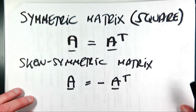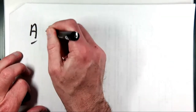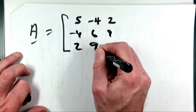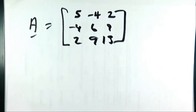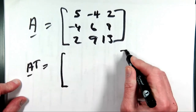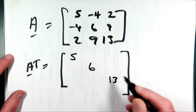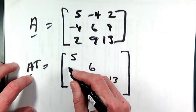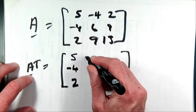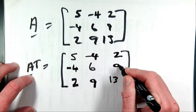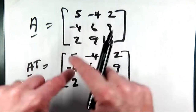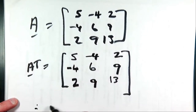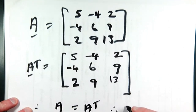Let's look at an example. Suppose A = [5, -4, 2; -4, 6, 9; 2, 9, 13]. If you take the transpose, the main diagonals are the same. Taking the first row as the first column gives [-4, 2]; the second row as the second column gives [-4, 6, 9]; and the third row as the third column gives [2, 9, 13]. You'll see that A and Aᵀ are identical — all elements are the same. Therefore A = Aᵀ, and therefore A is symmetric.